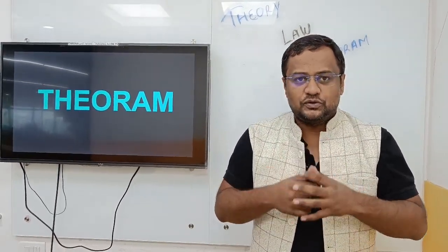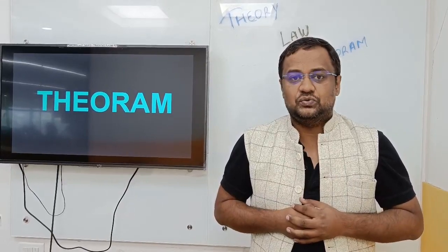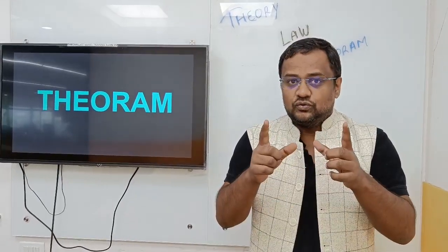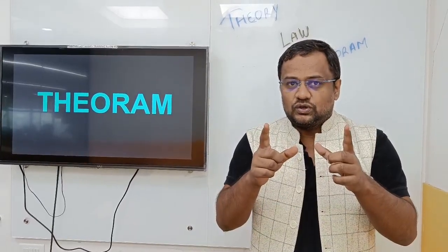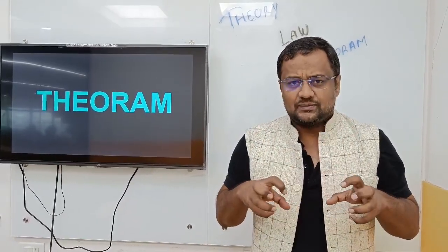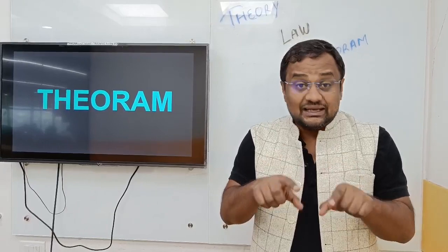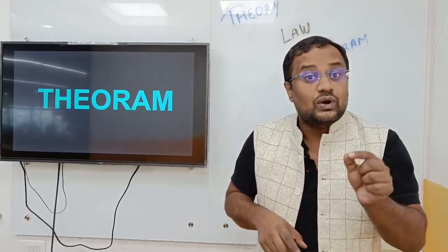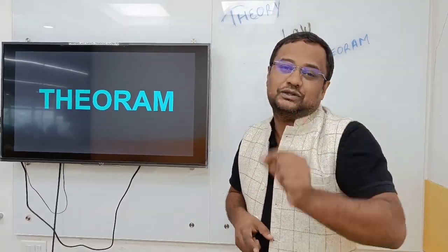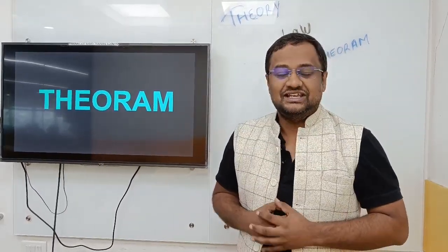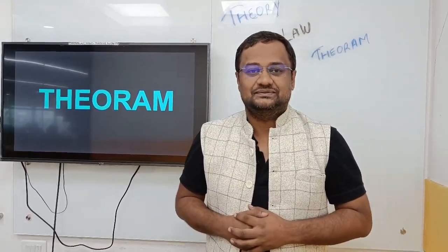Let me summarize: theories are justification based on certain experiments, and theories might change or evolve — some better theory can come. But laws are fixed, and theorems are fixed. Additionally, a theorem has one or more proofs. Thank you guys, I hope you enjoyed this video. Please let me know in the comment section, and also tell me in the comment section: what is a hypothesis?